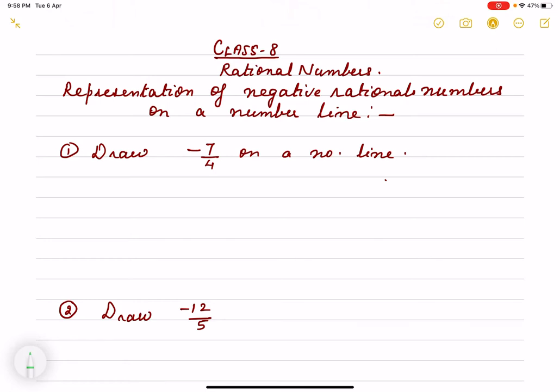Hello children, today I am going to show you how to represent negative rational numbers on a number line. I have taken a negative rational number where the numerator is bigger than the denominator.